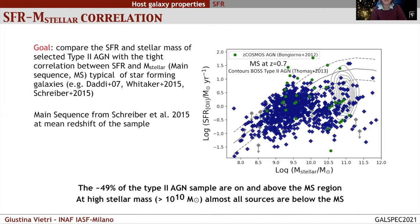We compared our targets with the optically selected AGN from the zCOSMOS sample of Bongiorno et al. 2012, which span a similar range in redshift, star formation rate, and stellar mass. Contours show the X-ray AGN from Thomas 2013, which also have a similar redshift range but probe the high-mass end of the stellar mass distribution. At that bin of stellar mass, they show a similar star formation rate to our targets.